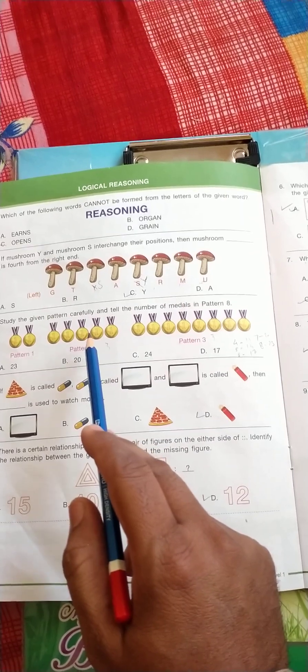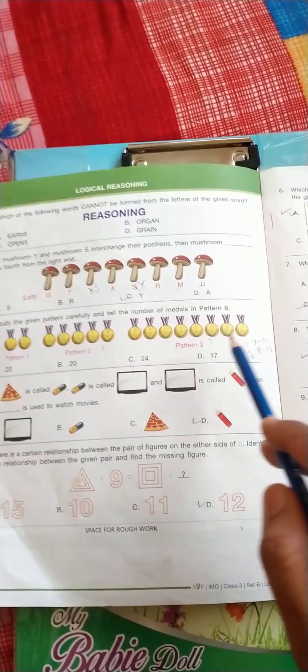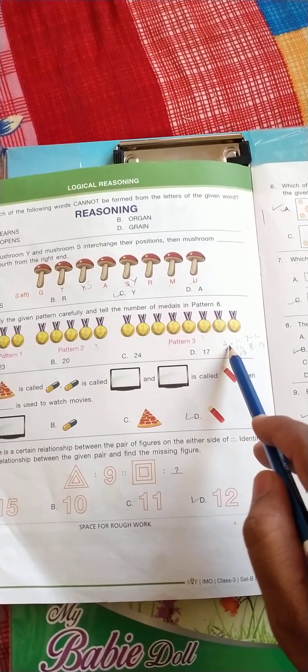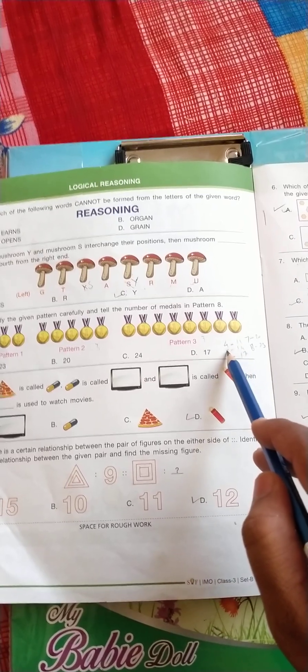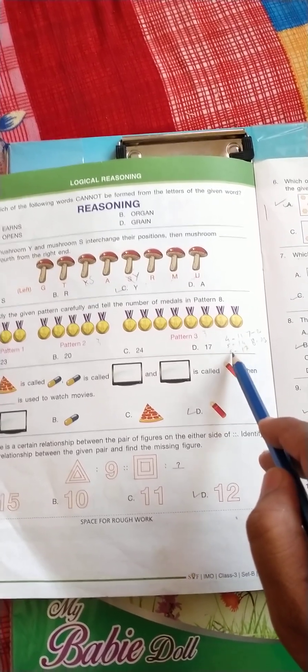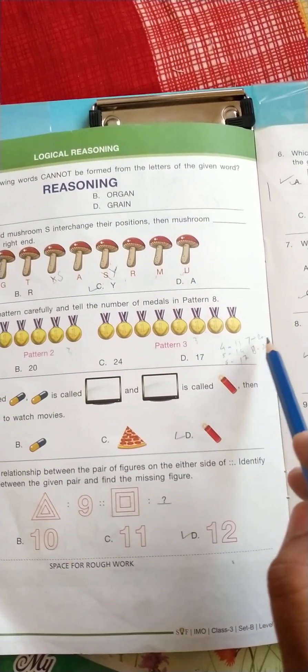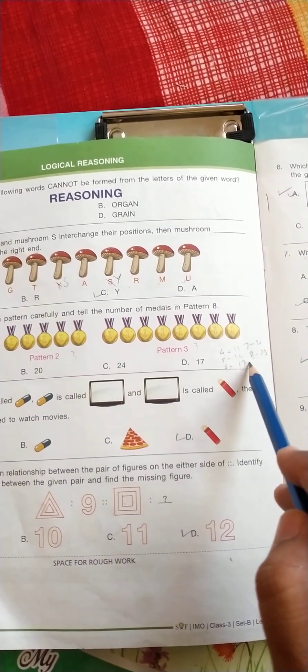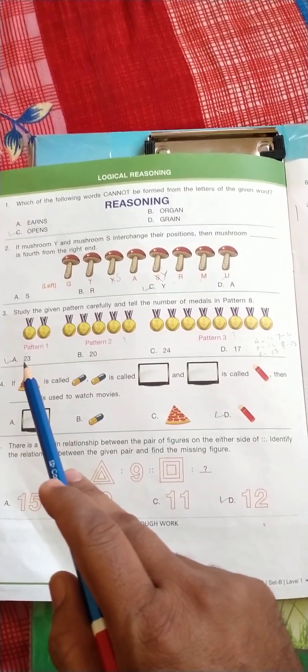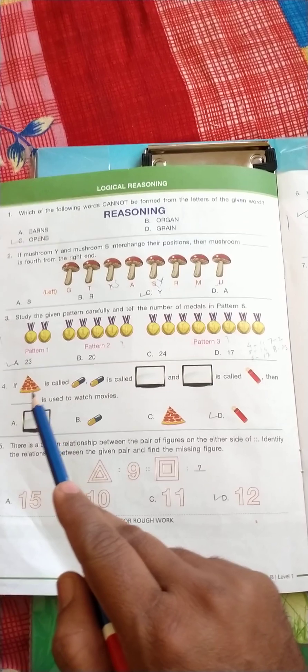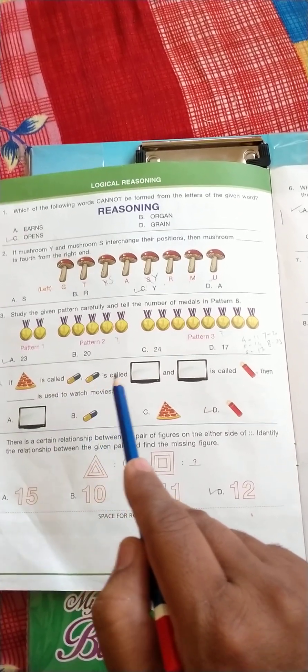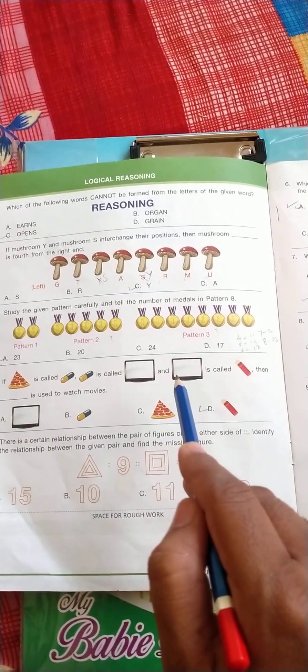So in the same way, in the four pattern there is 11 medals, in the fifth pattern 14 medals, six pattern 17 medals, seven pattern 20 medals, and in the eighth pattern there is 23 medals. So the correct answer is A, 23.